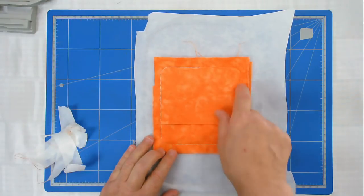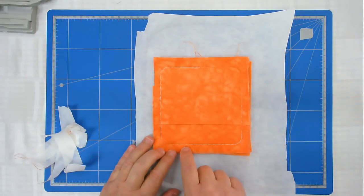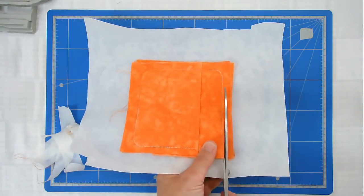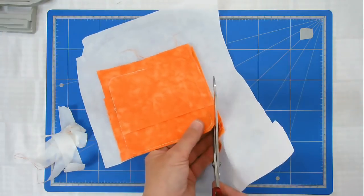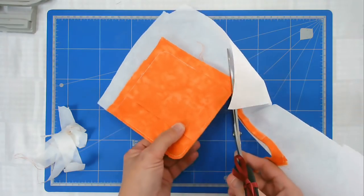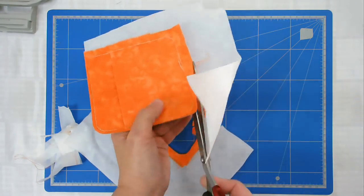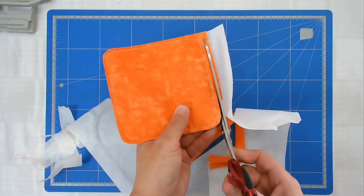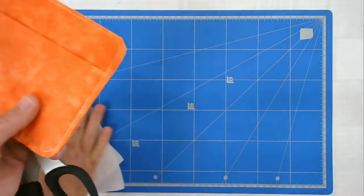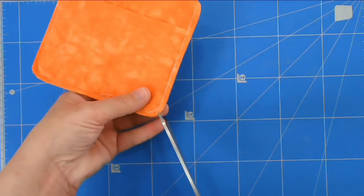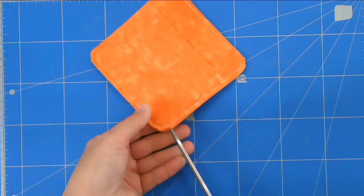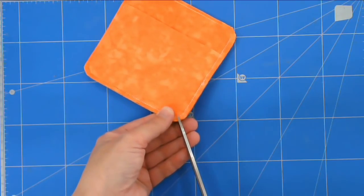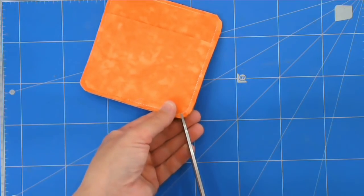And next I'm going to trim up all around the edge. I'm going to trim to within about a quarter of an inch here. Now that that's trimmed up I'm just going to snip around the edges here so that when I turn it out the right way they sit nice and neat in the corners.